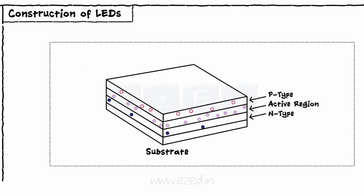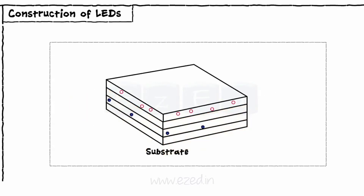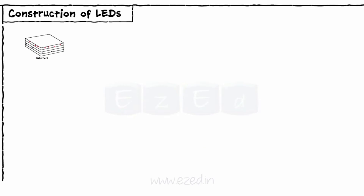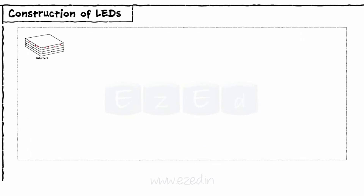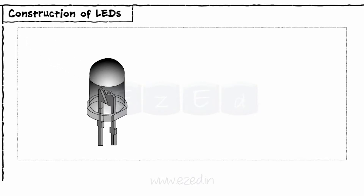This active region emits light when electrons and holes recombine in this region. As the active region emits light in all the directions, the basic layered structure is kept in a tiny cup structure as indicated by the diagram.